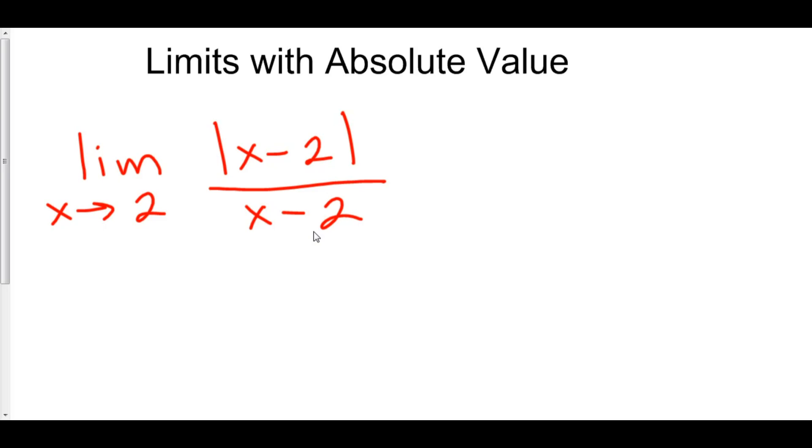Turns out, x minus 2 over x minus 2 is 1. The only difference here is that our x minus 2 on top is always going to be positive. And our x minus 2 on bottom, well, it depends. Well, what does it depend on? It depends on what x is.